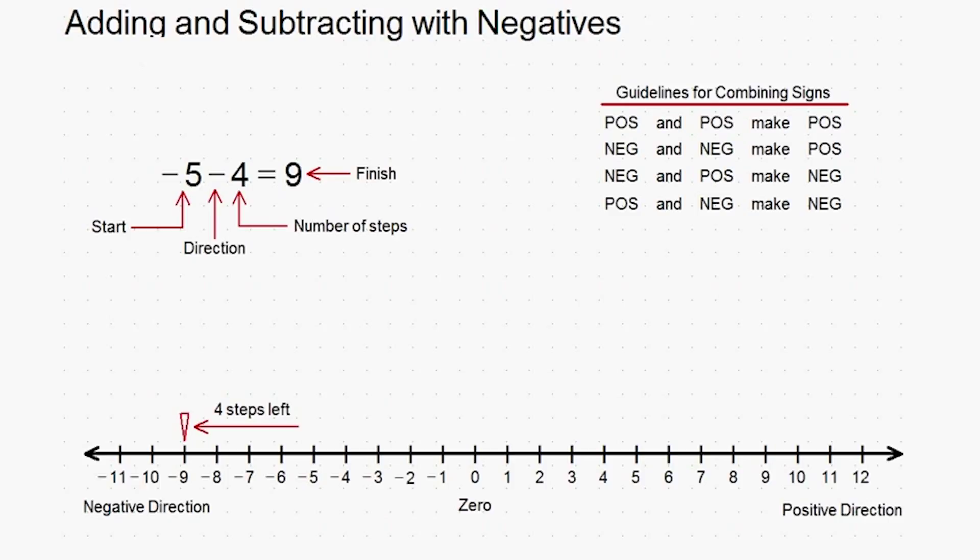Let's just see one more quick example to cement these concepts: 1 minus negative 7. Remember, the first thing we have to do is deal with those double signs. Minus and minus make plus, so I'll just go ahead and make that replacement now.